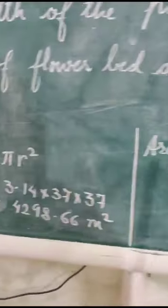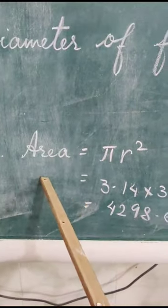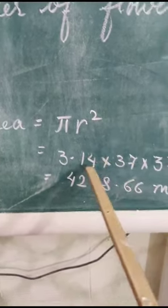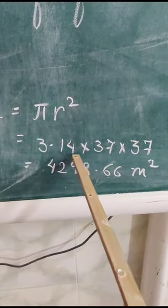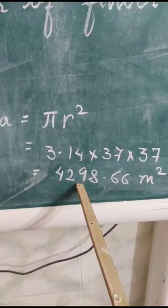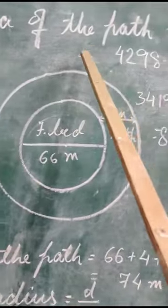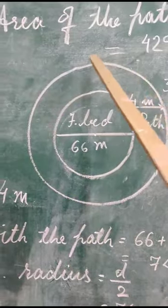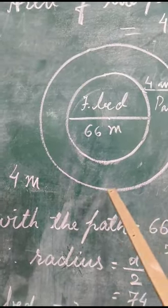Now, you know 37 meters is the radius, then you can find out the area by putting the value in the formula pi r squared—3.14 into 37 into 37. This area is the area of this bigger circle.